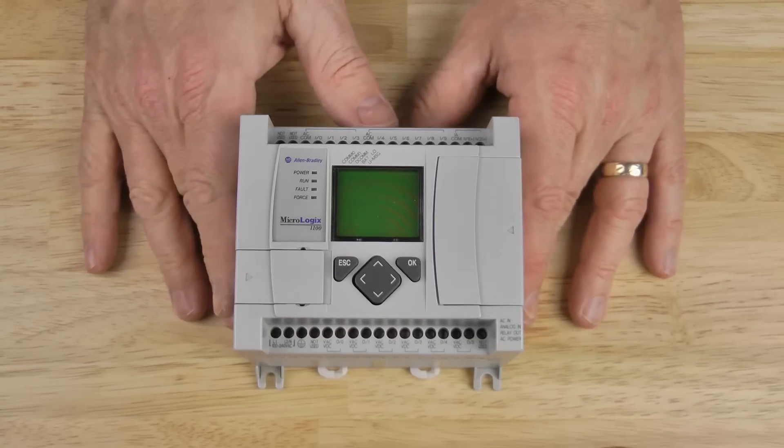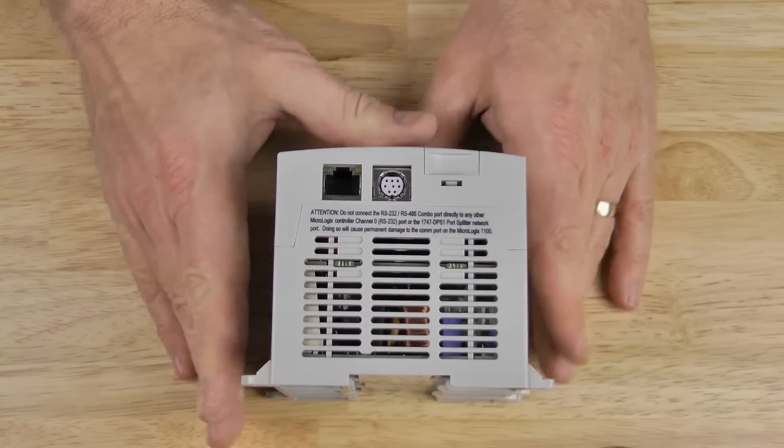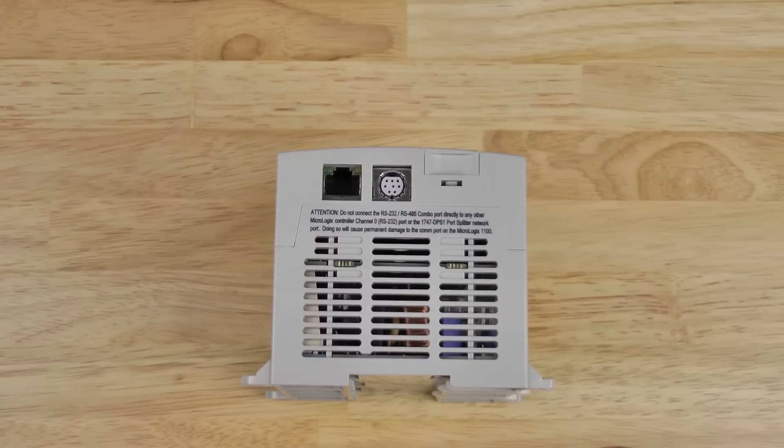Now if we take a look at the MicroLogix 1100, we can see on the left-hand side of the unit there is a mini DIN port as well as an RJ45 Ethernet port.